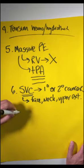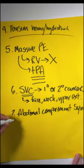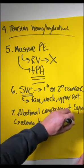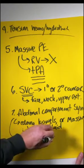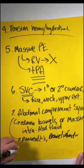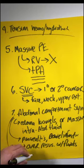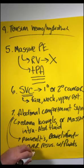The next cause of obstructive shock is abdominal compartment syndrome. Abdominal compartment syndrome occurs when there is edema of the bowels or a massive amount of intra-abdominal fluid. This can come from things like pancreatitis, bowel infarction, and dead gut and also just from over resuscitation with fluids.